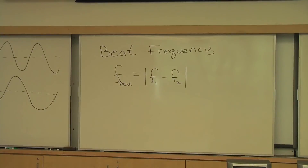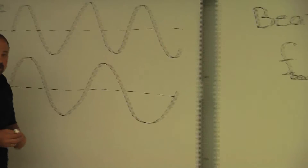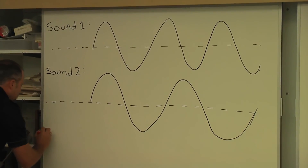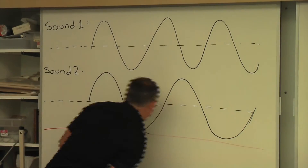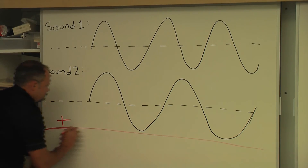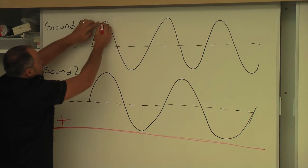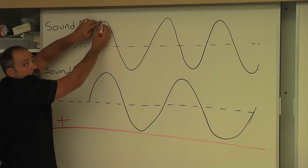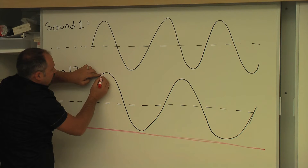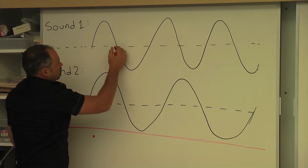So out of sound one, you have some signal with this frequency. Out of sound two, you have some signal with a slightly larger frequency. These waves get added — it's just a matter of addition and subtraction. So let's add them up. Here's my addition line. In the beginning, they're pretty well aligned — the peak here is almost aligned with the peak there — so if I come down here, it's going to be pretty hot. Going a little further...